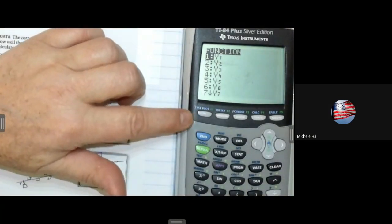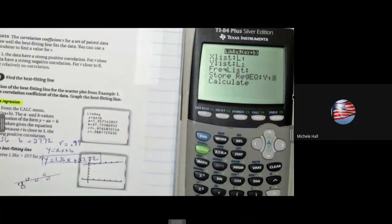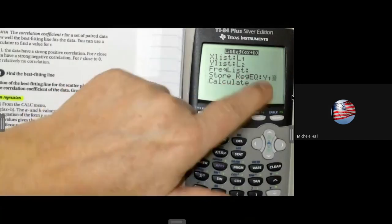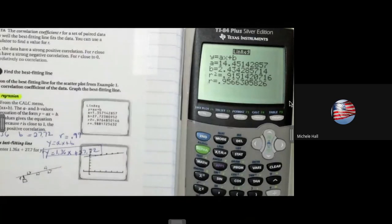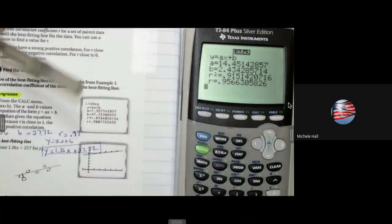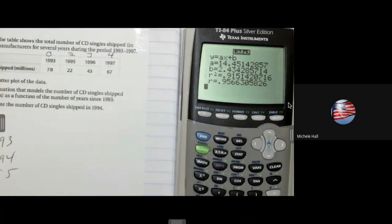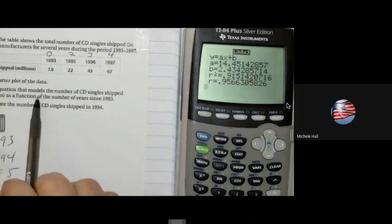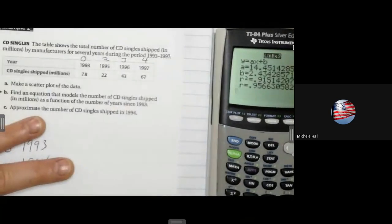I hit enter. Now it says store regression equation where? In y1. So I hit enter, enter, and I'm still going to write down my information because on most of the problems they want you to write down the equation in the work. All right, find an equation. So there is the question right there. Question b says find the equation.